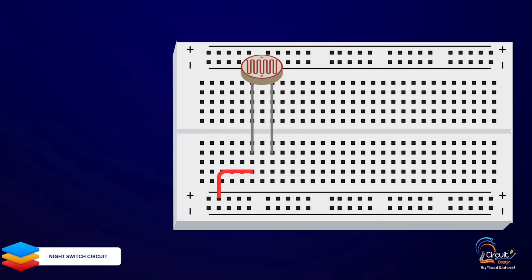Connecting the LDR. Connect one leg of the LDR to the positive rail of the breadboard, which will be connected to the positive terminal of our power source. Adding the 10 kOhm resistor. Now, connect the other leg of the LDR to one leg of the 10 kOhm resistor.